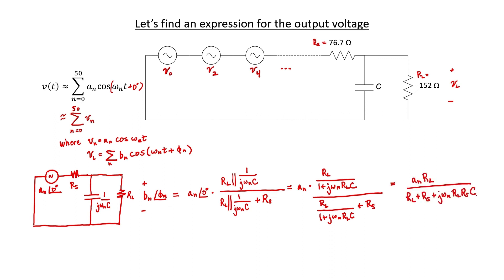We can drop the phase angle of zero and expand out our components that are in parallel. Finally, we have an expression for the output voltage in terms of the input voltage and all of our components of the circuit.